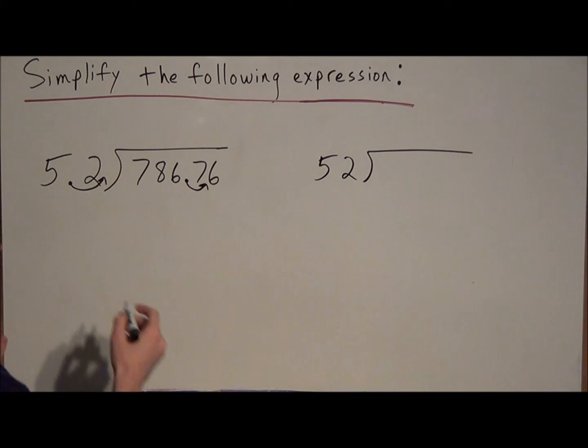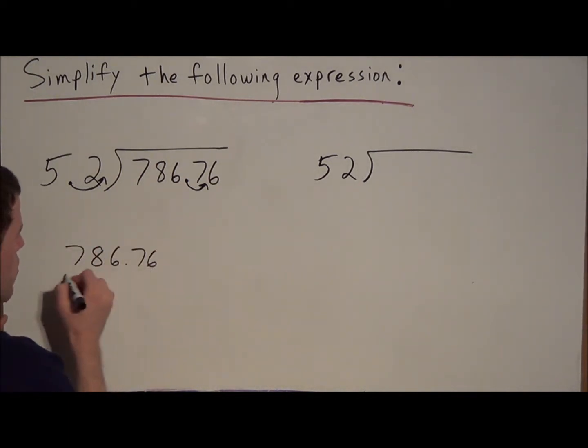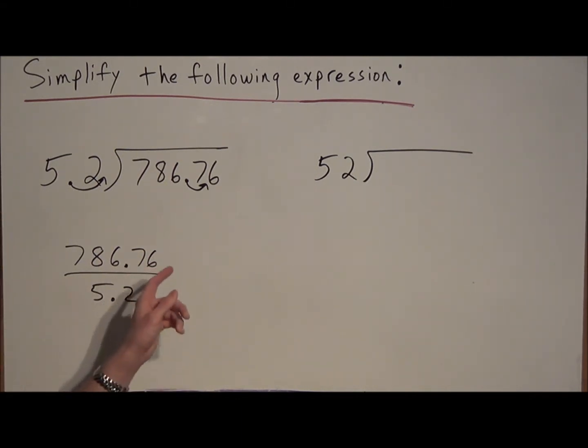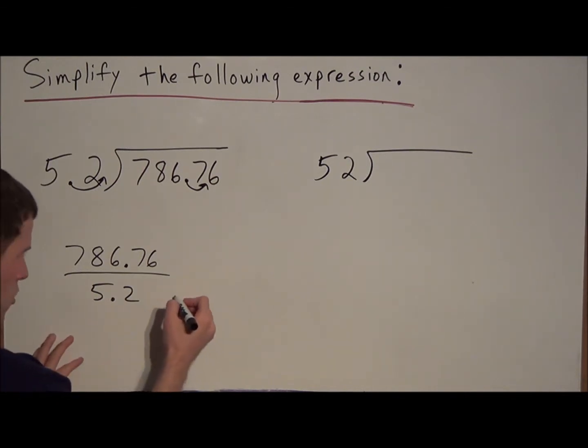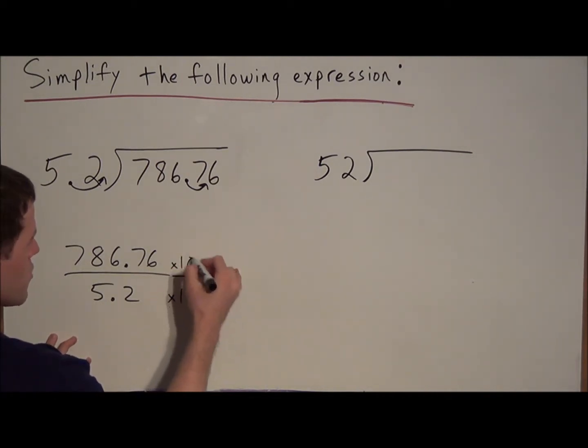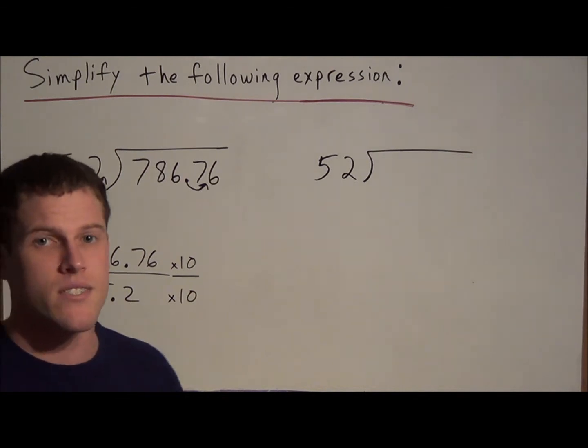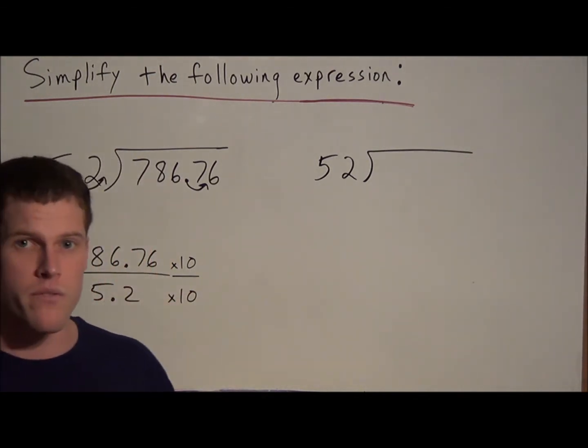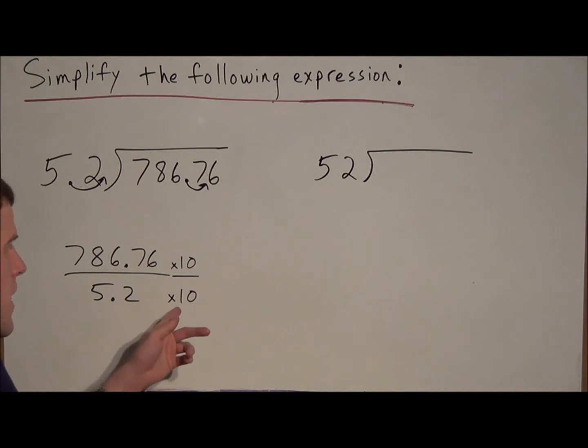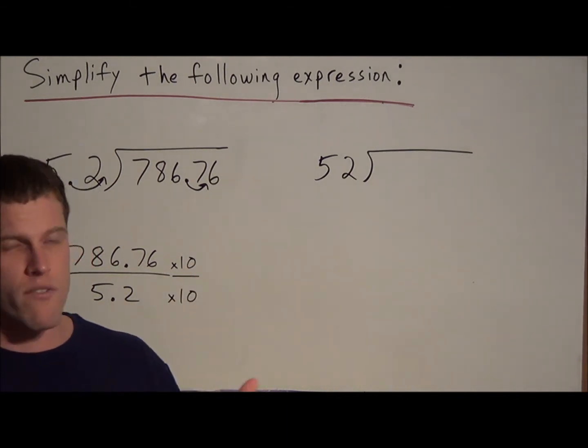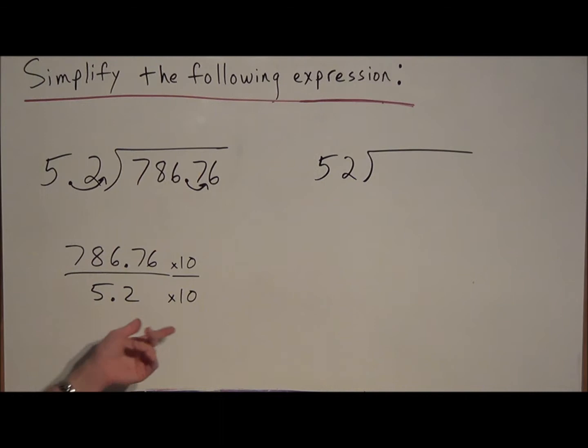And just really quick, the concept of why we need to do that is, well, notice 786.76 over 5.2 would be the fraction form of this division problem. But by moving this decimal one place over to the right, we're really multiplying it by 10. But if we multiply the denominator by 10, we have to also multiply the numerator by 10, otherwise we're changing the value of the problem. This is a lot like the concept of equivalent fractions. Whatever you do to the denominator, you have to do to the numerator. So that's the concept here, that we're multiplying the top and bottom by 10.